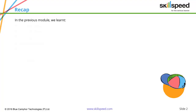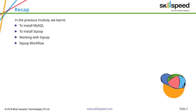In the previous module, we talked about Sqoop and we learned what exactly Sqoop is, the internal architecture of Sqoop, and how Sqoop can efficiently export and import data between RDBMS systems and Hadoop. We also saw practical examples of importing data from RDBMS into HBase, HDFS, and Hive using Sqoop.